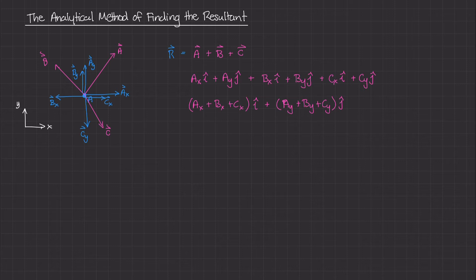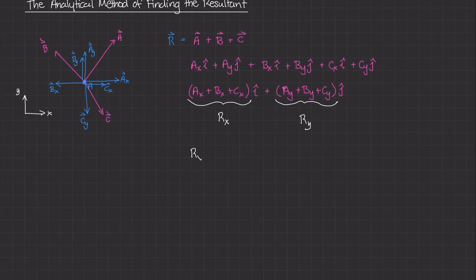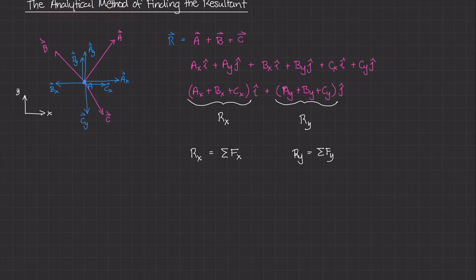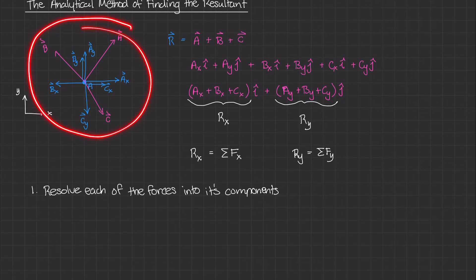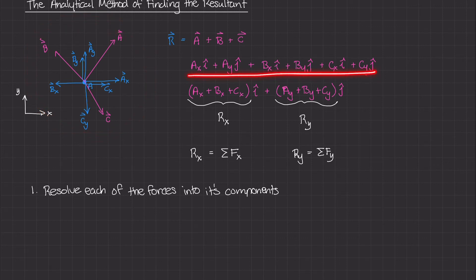What's important about this equation is that if we sum all the scalar quantities in the X direction, we get the X component of the resultant force. And if we do the same thing for all the quantities in the Y direction, we get the Y component of the resultant force. So a shorthand way of saying this is that RX, the scalar quantity of the X component of the resultant vector, is equal to the sum of all the forces in the X direction. Similarly, RY is equal to the sum of all the forces in the Y direction.